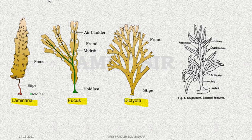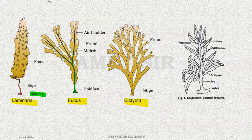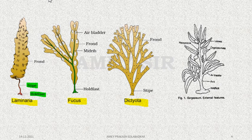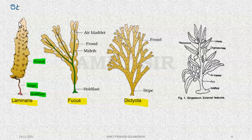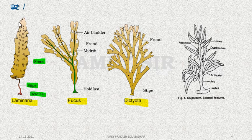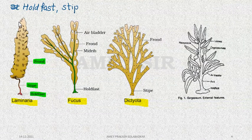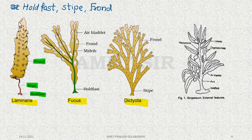Brown Algae have three body parts. The basal part which remains attached is the holdfast (root-like). The elongated axis is the stipe (stem-like). The structure similar to a leaf is called the Frond (leaf-like). So the three body parts of Brown Algae are: holdfast, stipe, and frond.